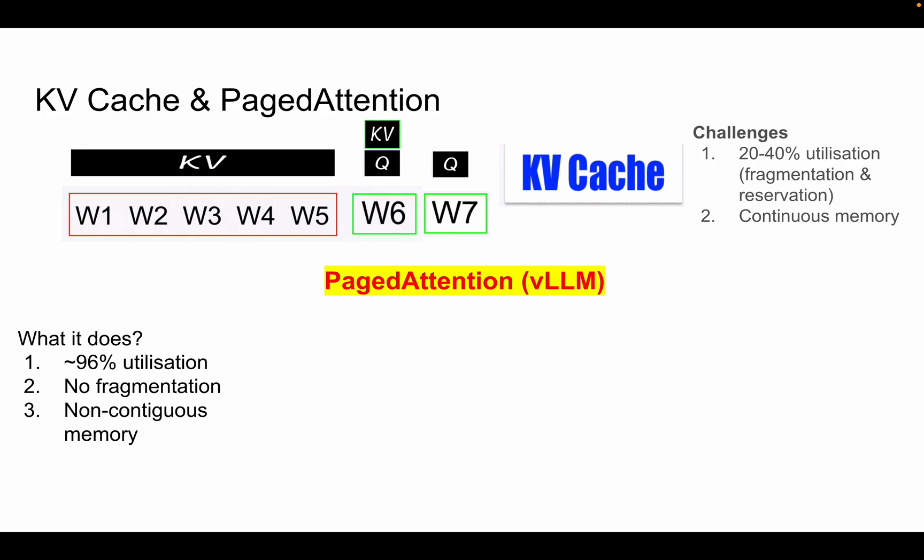Previously with KV cache we used to get only around 40% memory utilization, but with PagedAttention we can go up to 96% utilization. We'll also discuss why not 100% utilization later on. Comparatively there is no fragmentation when we use PagedAttention — though there is some minor fragmentation which we'll also discuss. And one key constraint in KV cache was that memory needs to be continuous, but with PagedAttention memory need not be continuous.